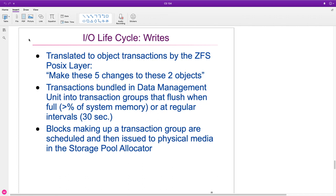We do this based on either how much memory we have, because all this stuff is being cached in memory, or based on time. If the transaction group never gets committed, we lose it, just like in EXT3. The transaction group is handled by the storage pool allocator, which actually writes the stuff out to disk.